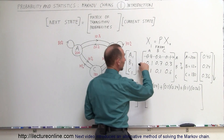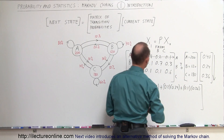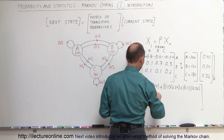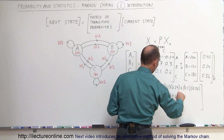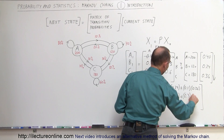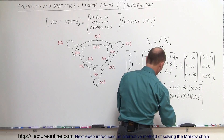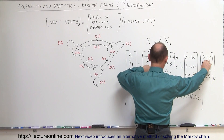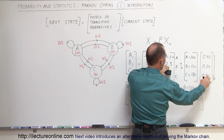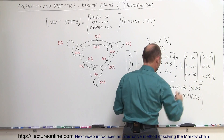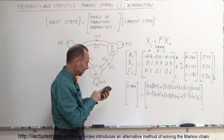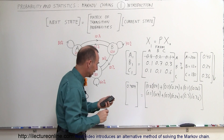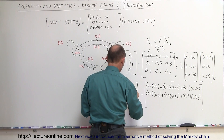Next, we take the second row and multiply it times the current state column to get B1. This becomes 0.1 times 0.4 plus 0.7 times 0.24 plus 0.3 times 0.36 — going horizontally across the row and vertically down the column. When we calculate that, we get 0.04 plus 0.168 plus 0.108, which gives us 0.316.